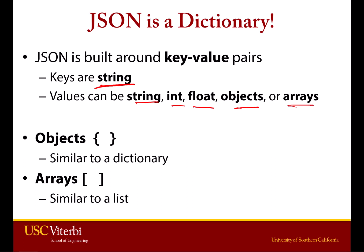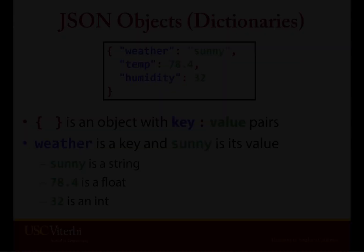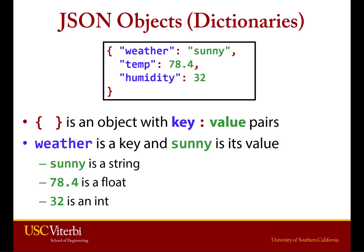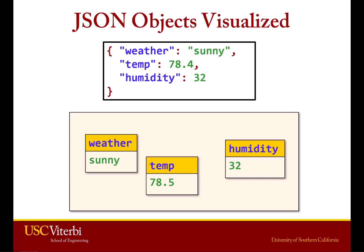Your values can be int, string, float, dictionary, and list. Objects in JSON are set up with curly braces, and arrays — which we would call lists — are set up with square braces. If we look at a JSON object, which is what we would think of as a dictionary, it's got curly braces and a set of key-value pairs. For example, weather colon sunny — weather is the key, sunny is the value. We can also see 78.4 as a float and 32 as an int. It looks identical to a Python dictionary.